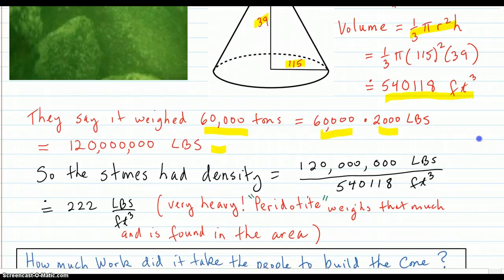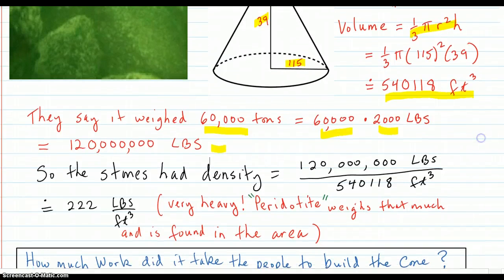And I want to know what the stone density is, so we can do our work problem. So the stone density is what we're after. So that's pounds per cubic foot. So we just divide those two numbers that we obtain there. And it's 222 pounds per cubic foot.